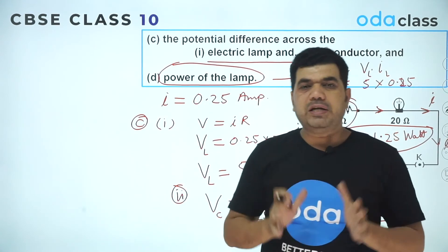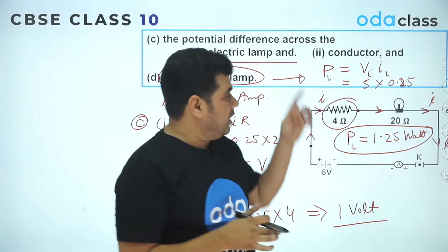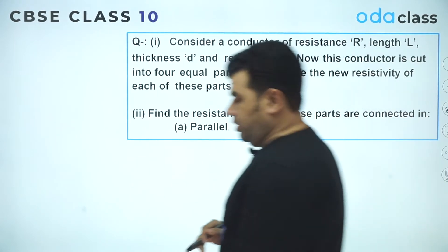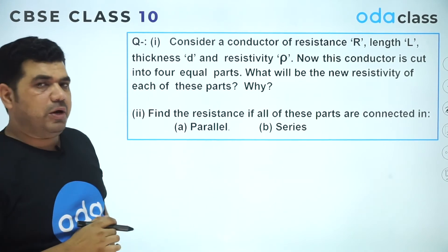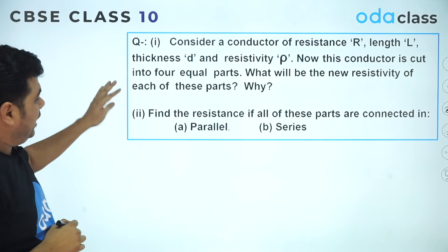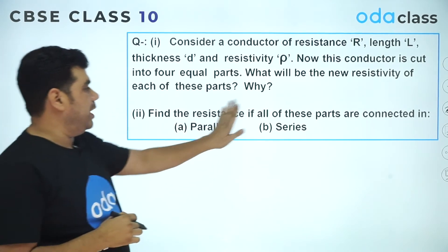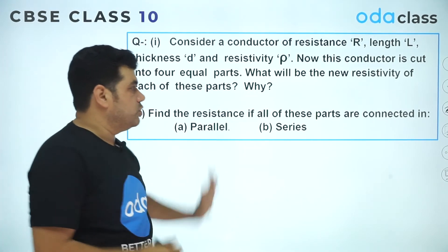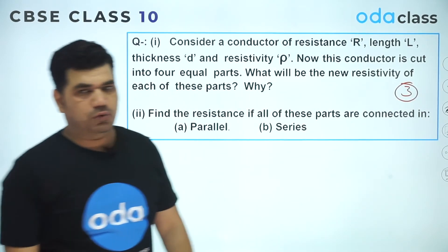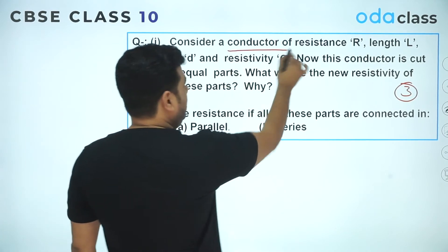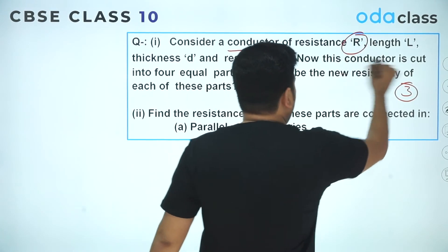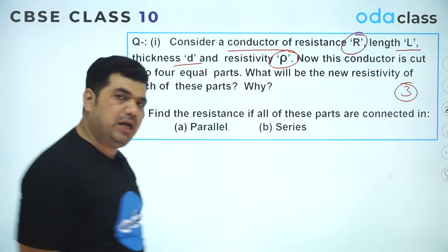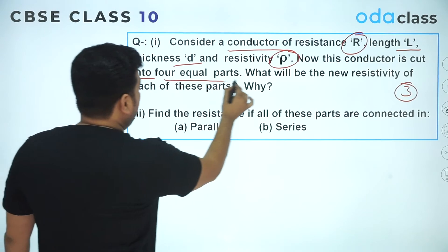Let's look at one more three-mark question from previous years. This question has two parts, and the second part is further divided into (a) and (b) — one mark each, totaling three marks. Consider a conductor having resistance R, length l, thickness d, and resistivity ρ. This conductor is cut into four equal parts. What will be the new resistivity of each part?